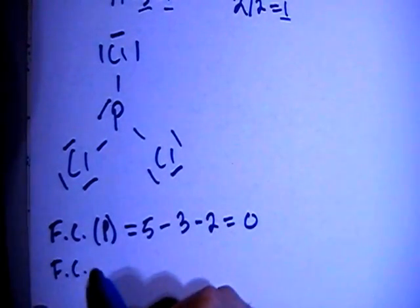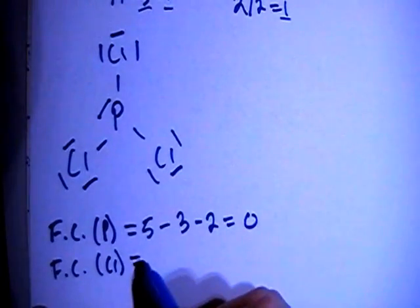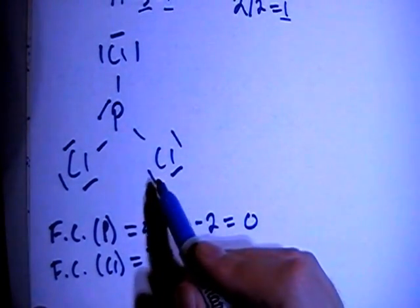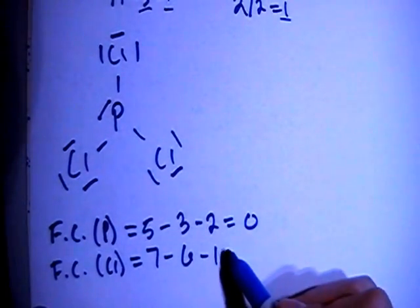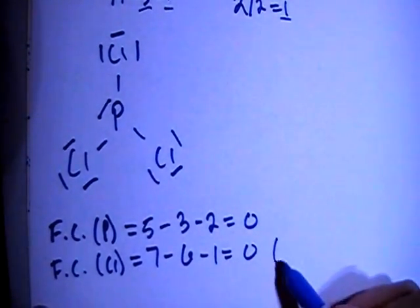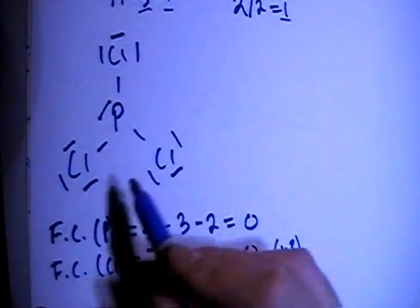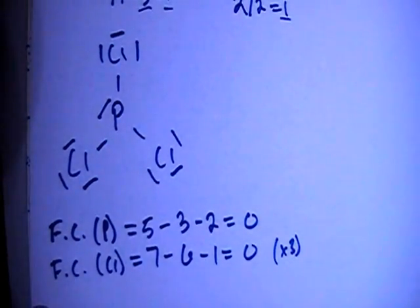The formal charge on each of the chlorines is going to be 7 valence brought in, minus 6 non-bonding electrons on each one, minus 1 bond for each one, which is also going to be 0. And that's times 3, because there's 3 of the same chlorines.